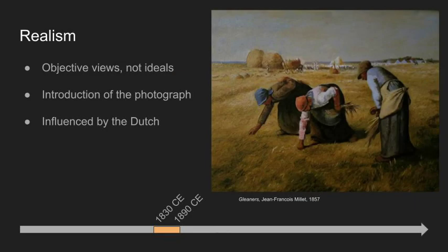Lashing out against the excess and self-indulgence of the romantics, artists of the realism movement were more focused on portrayal of the world as it is, rather than exaggeration and extravagance. With the use of new technology like the film camera, pieces during this movement captured moments of normal life, and painters created images with no illusion or artificiality. These moments would be similar to the still-life trend explored by the Dutch Golden Age artists.